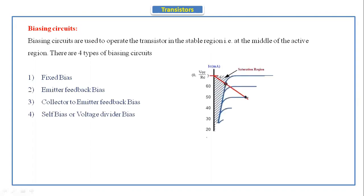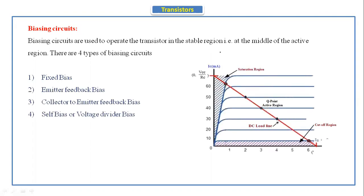There are four types of biasing circuits. The DC load line for the output — the line which is touching the output characteristics — is called the DC load line. We have discussed the DC load line in the previous classes. If anybody has not watched the DC load line topic, please go through that video. In today's class we will discuss about the collector to emitter feedback bias.